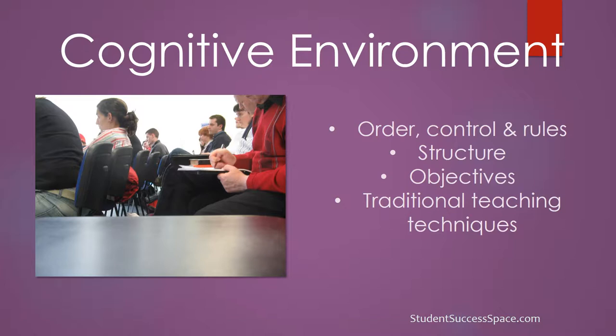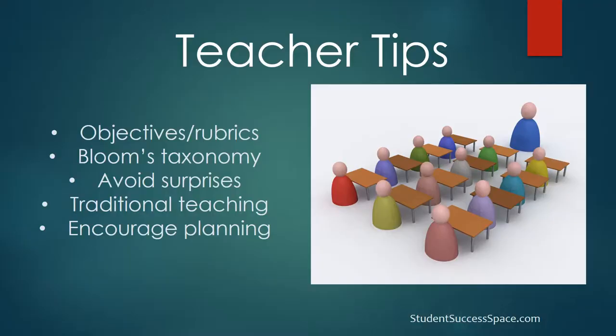A cognitive environment for a judger is exactly what you see in the picture: order, control, tradition. It is easy for the instructor who likes that kind of classroom. Judgers need objectives and rubrics — those things are essential to their learning process. Since they don't like surprises, they need detailed instructions and do not want anything to derail their learning process. They can participate in a group or interactive atmosphere if needed, but they would need highly specified guidelines so that they can create efficiency and order.